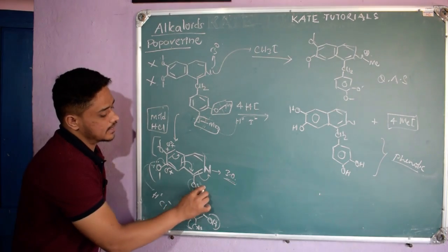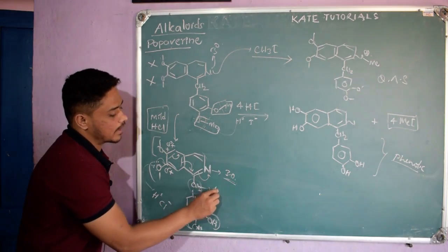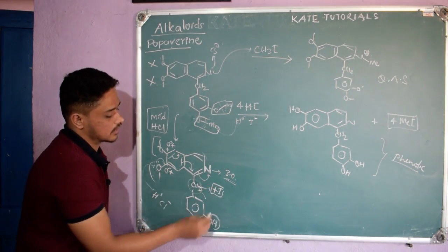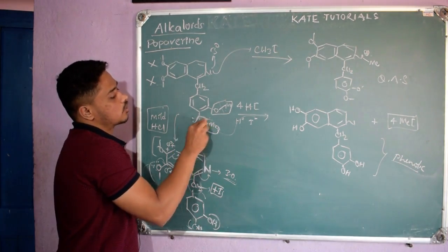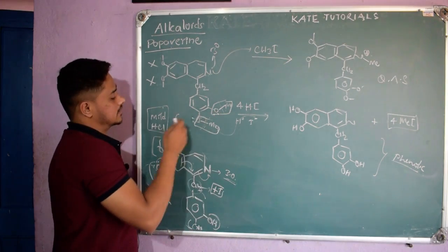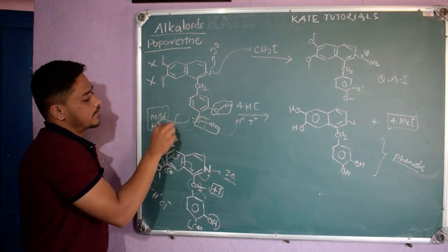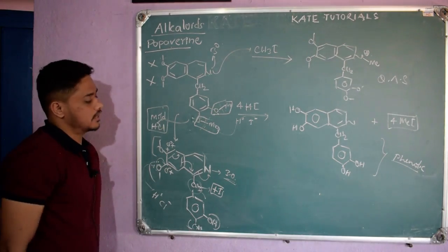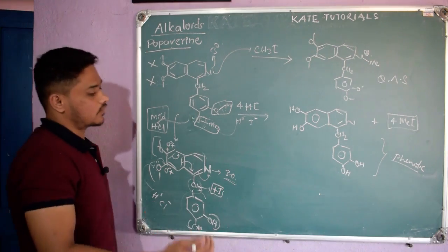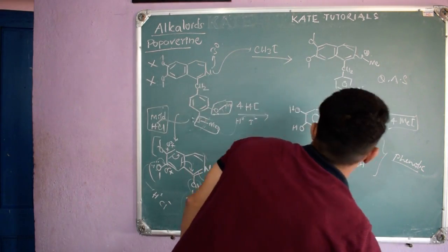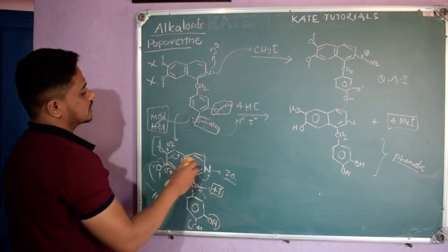On the other side, the CH₂ group is an electron-donating group by the +I (inductive) effect. So the oxygens on that benzene ring are electron-rich — their lone pairs readily donate to HCl. This is why only those OMe groups react with mild HCl to form OH, while the OMe groups on the isoquinoline side remain unreacted.